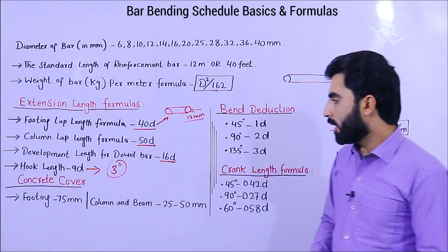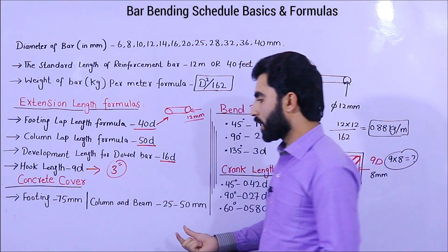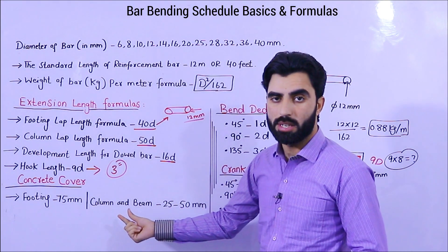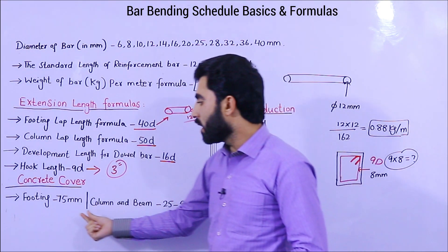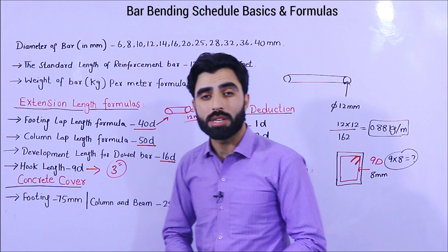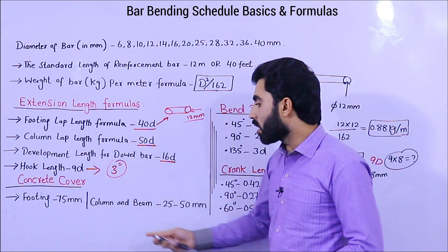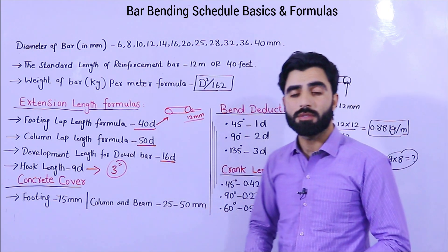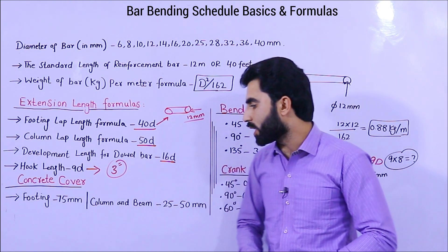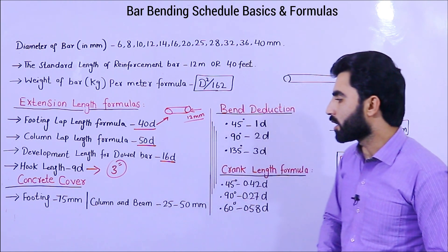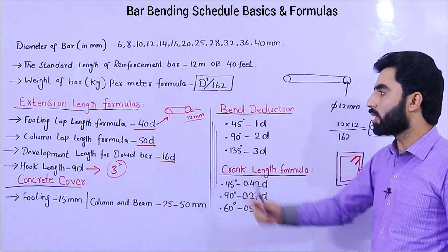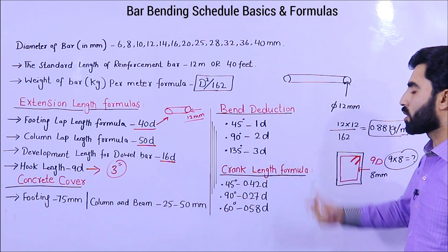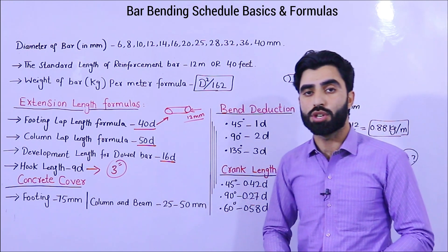Now, concrete cover for different RCC structures. For footing, the concrete cover or clear cover should be 75mm or 3 inches. For column and beam, it should be 25 to 50mm, meaning from 2 inches to 4 inches. These concrete cover values are important in bar bending schedule.